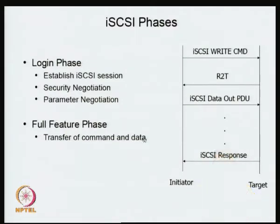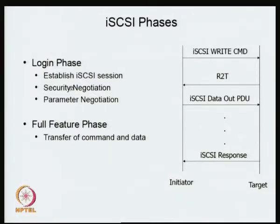If using IPsec, you also need a security negotiation phase where you negotiate what protocols are used for security — for example, Diffie-Hellman. There are actually six methods for types of security mechanisms. There is also parameter negotiation, such as negotiating the max burst length. All those things happen as part of iSCSI session establishment.